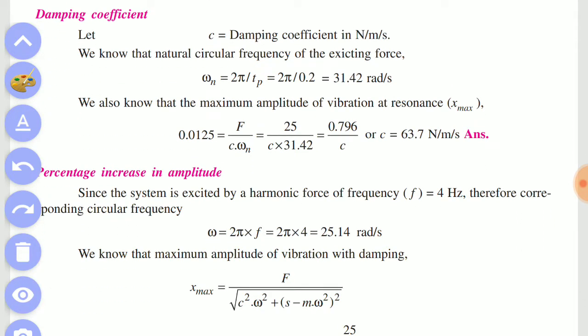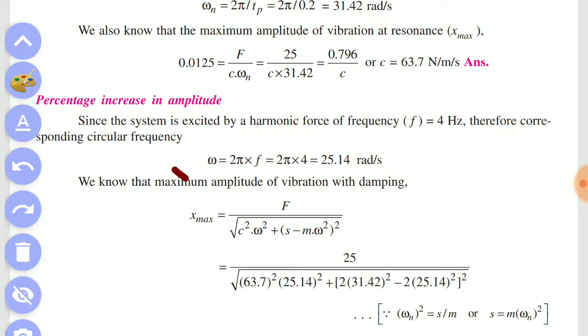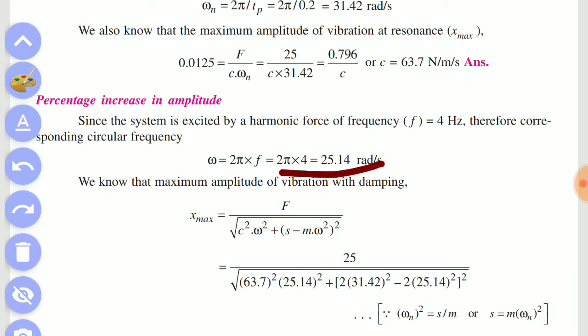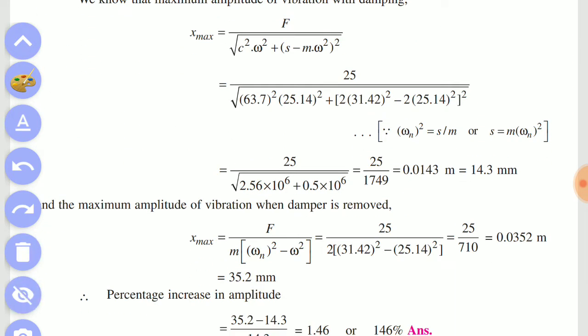Now you can see all these equations. Omega equals 2π times f. 2π times f gives 25.14 rad/s. So x_max has all values. If you substitute it, you get x_max equals 14.3 mm, or 0.0143 meters.